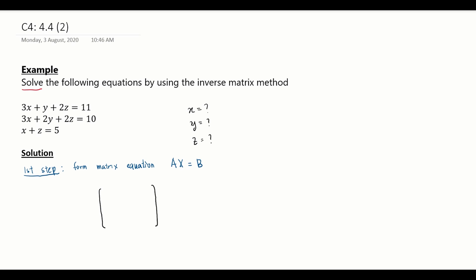Matrix A contains the coefficients for x, y, and z, arranged in corresponding rows. For the first equation, the coefficients are 3, 1, 2. For the second equation: 3, 2, 2. For the third equation, x has coefficient 1, y has coefficient 0 (no y term), and z has coefficient 1.